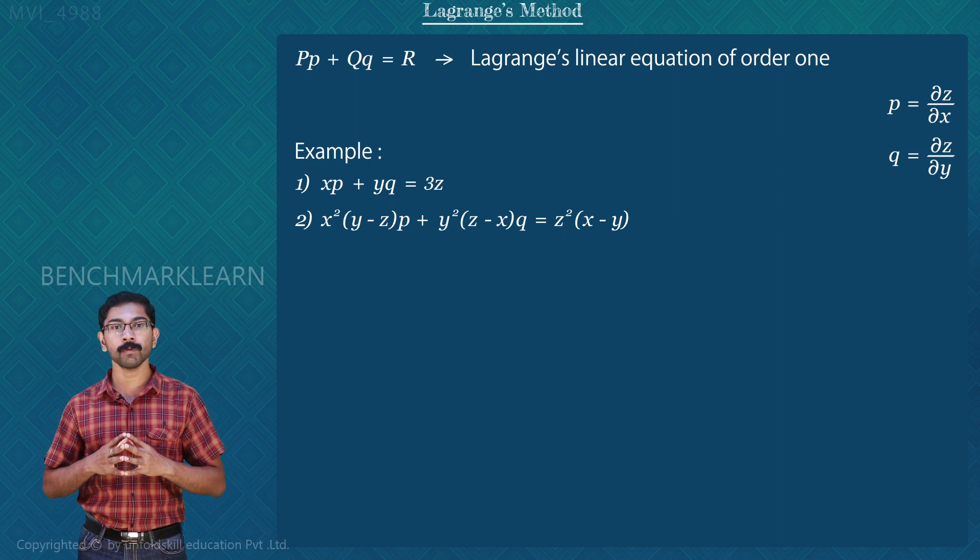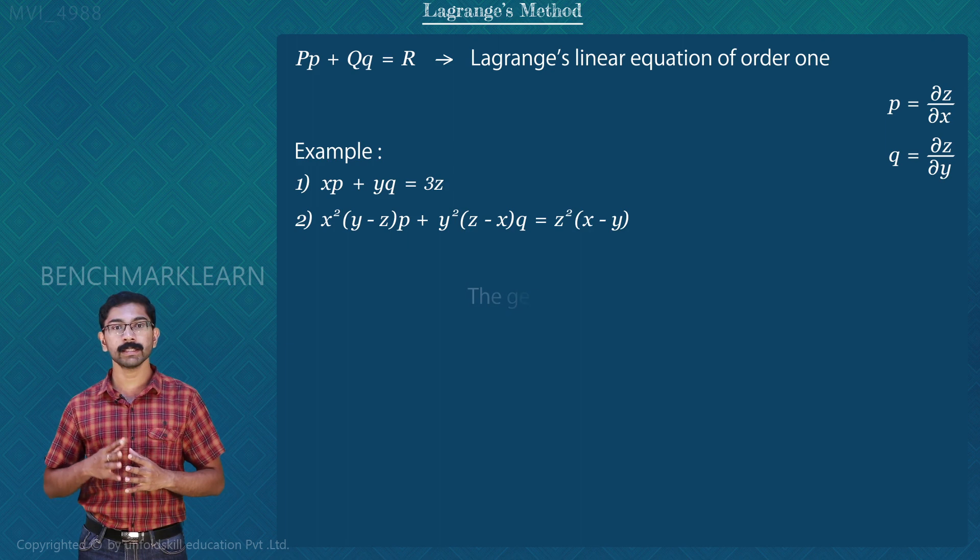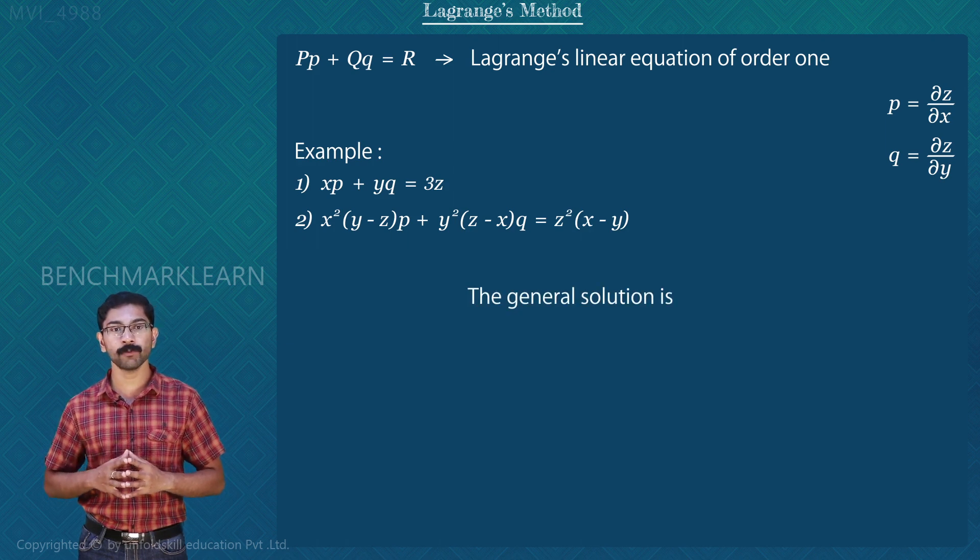The method of solving this type of PDE is known as Lagrange's method. The general solution of this PDE is in the form φ(u,v) = 0.